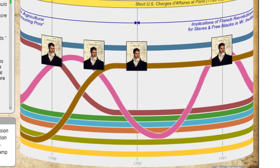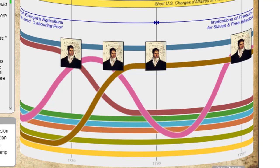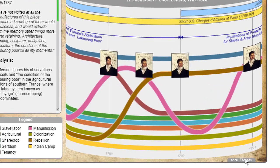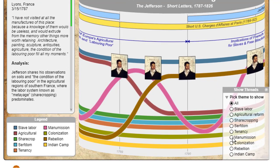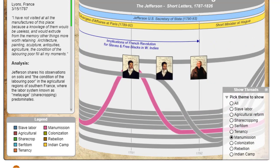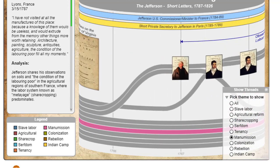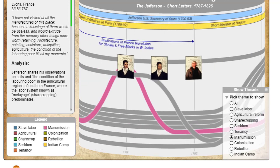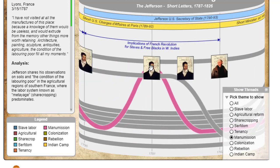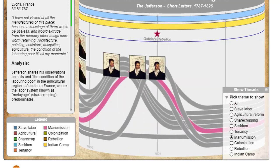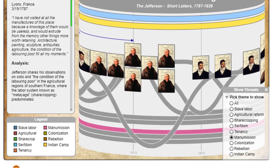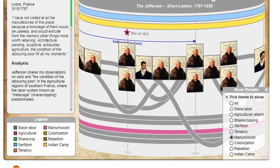If we were interested in rebellion or manumission, for example, we could say let's highlight manumission, so that's the only one that's colored here. We can look at it and see they talked about it various times. In this case, it's a letter from William Short to Jefferson where he talked about it, and you can see how these things interplayed.